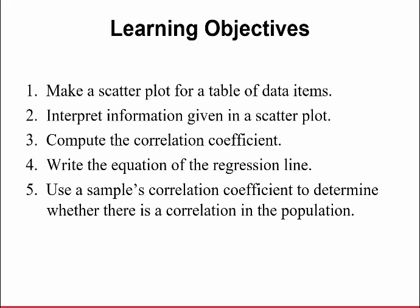Some learning objectives. The first thing I want to talk about is what we call a scatterplot — making a scatterplot from a table of data items. I want to then interpret information given in that scatterplot. I want to compute what's called the correlation coefficient — this is going to be the first time we use our calculator to help us do something very complicated. I want to write the equation of what we call a regression line. And then finally, I want to use the sample's correlation coefficient to determine whether there is a correlation in a population.